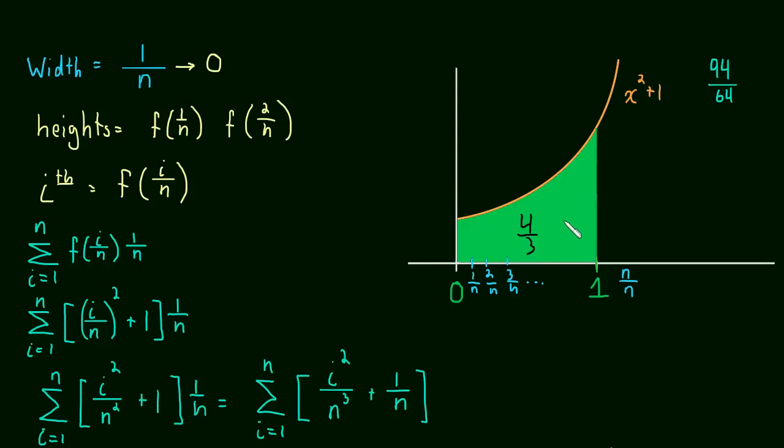And even though it's an infinite sum, you're getting a number, an exact value, 4 thirds. That is the area under that curve. That's wild.